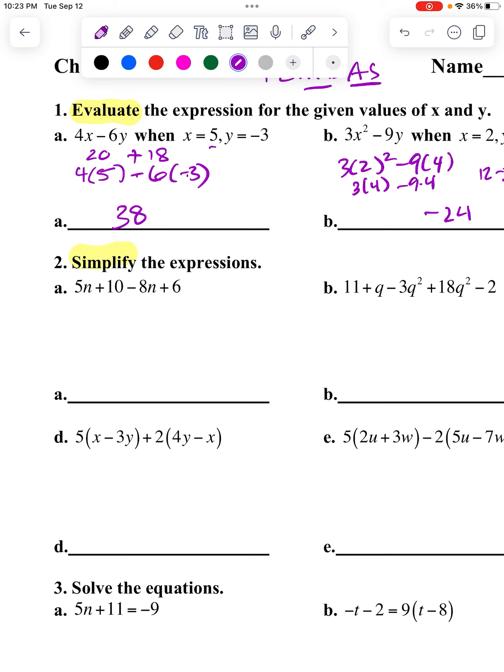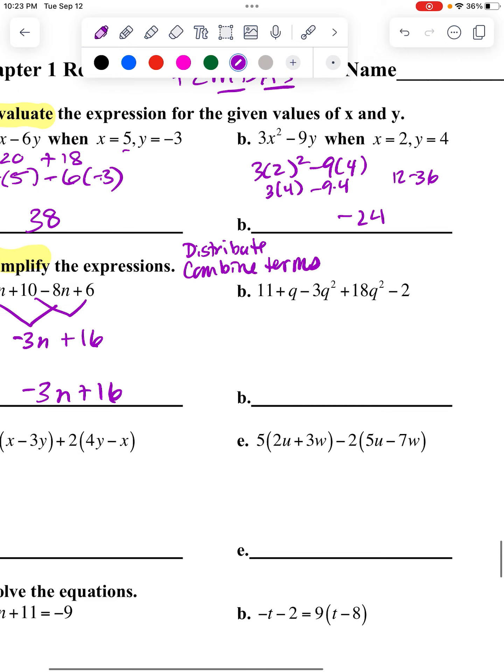So this is simplifying, and if you remember I talked about that, there's mainly two things you would do. One, you distribute if you have to. And then you combine like terms. So I don't have to distribute in this first one because there are no parentheses. So these are both N's. 5N minus 8N will be minus 3N. 10 plus 6, which are both just numbers obviously, will be 16. So when I'm done simplifying, that's all I can do. That's as simple as it goes.